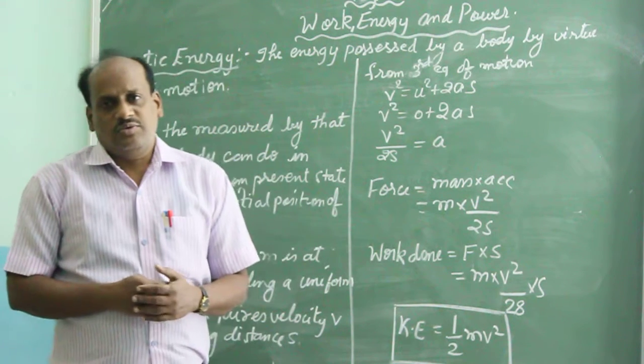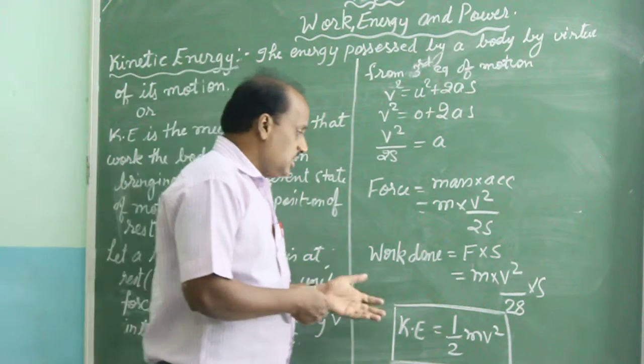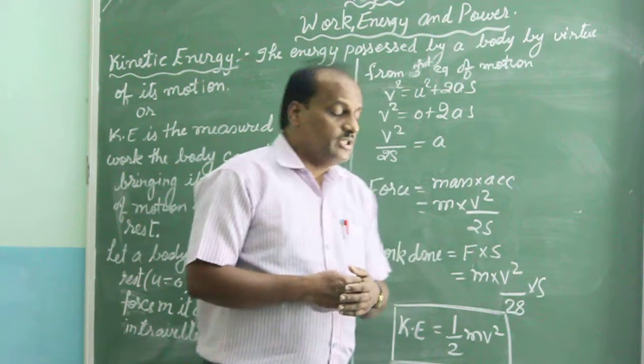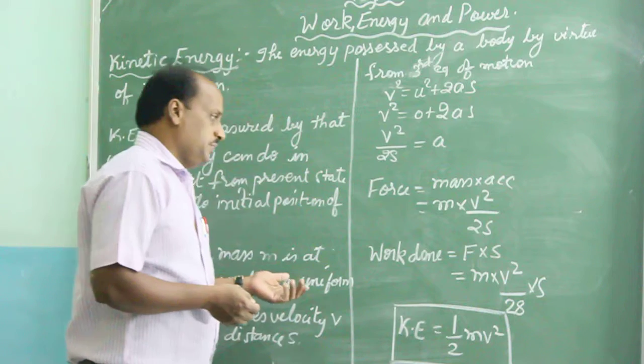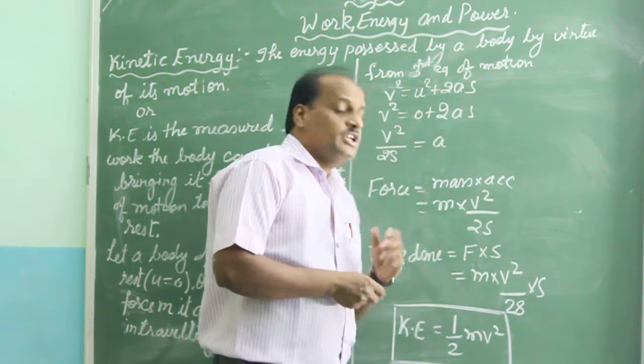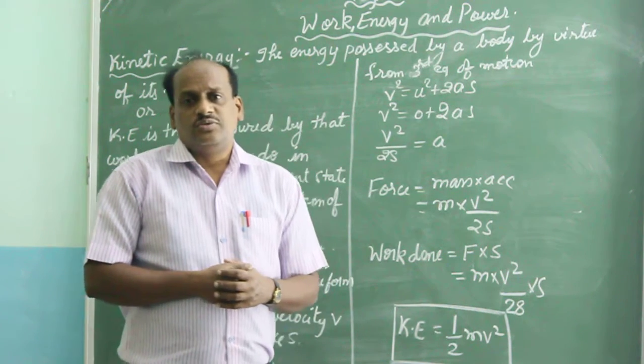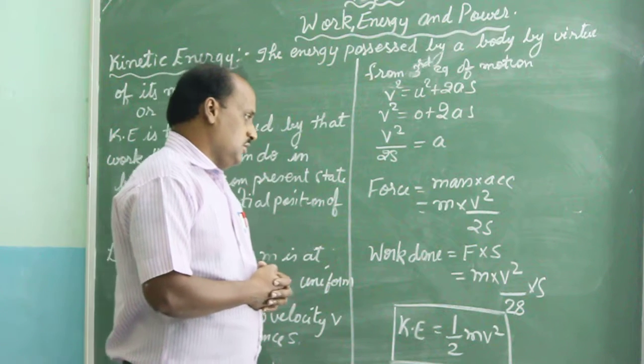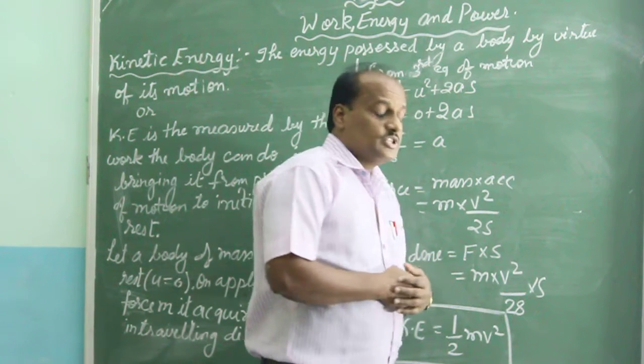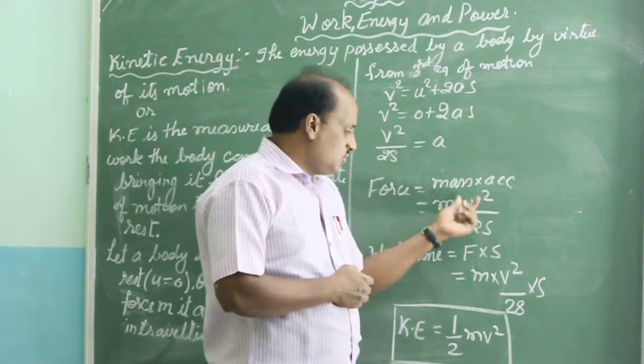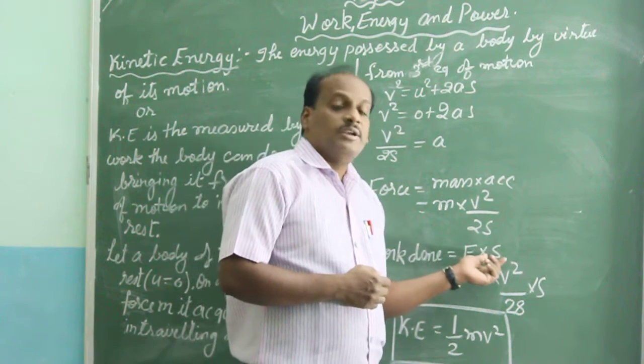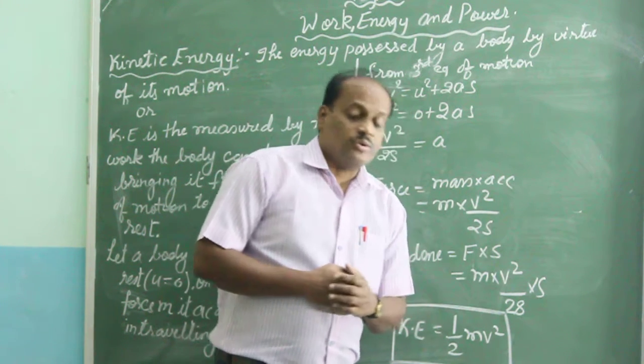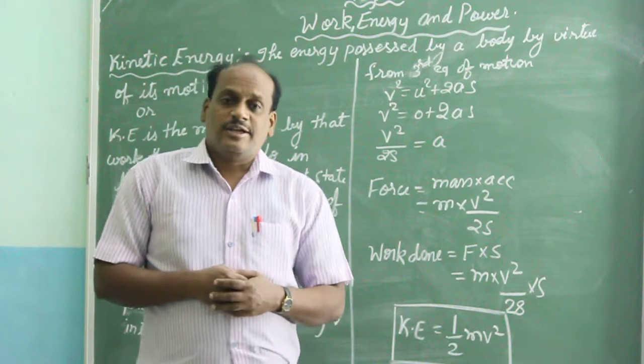So next is we have to find the work done. Work done is making this body from present state to s. So in this condition, work done equals to force into displacement. So value of force, that is mv²/2s, and what is displacement? Its value is s. So s and s will get cancelled.